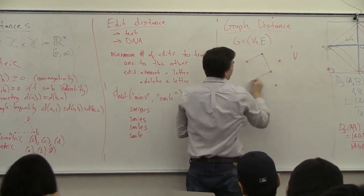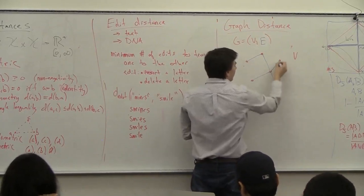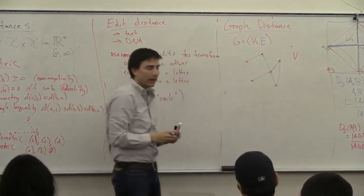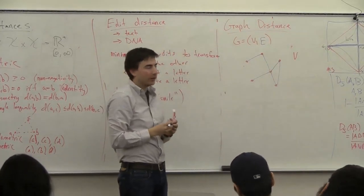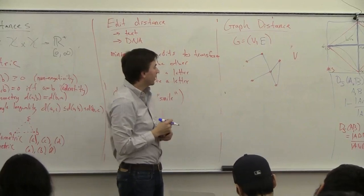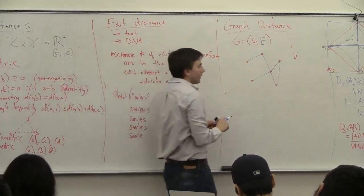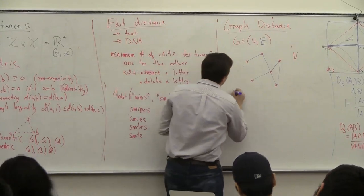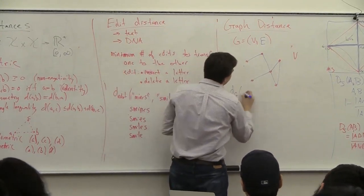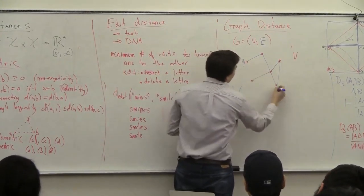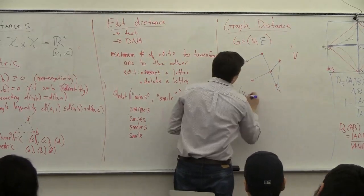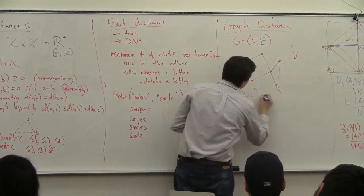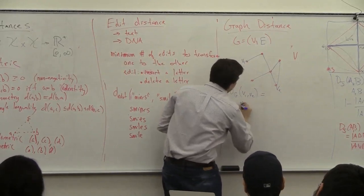There are things connecting these vertices, and we'll talk much more about graphs later in the semester. The distance on a graph between, say, v1 and v2, is equal to the minimum number of edges needed to get from v1 to v2.